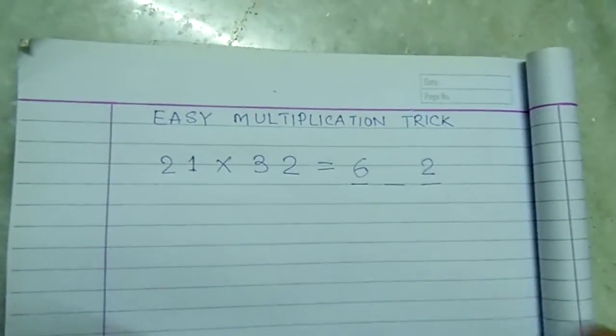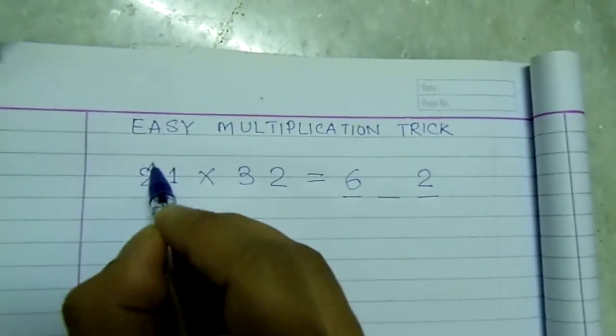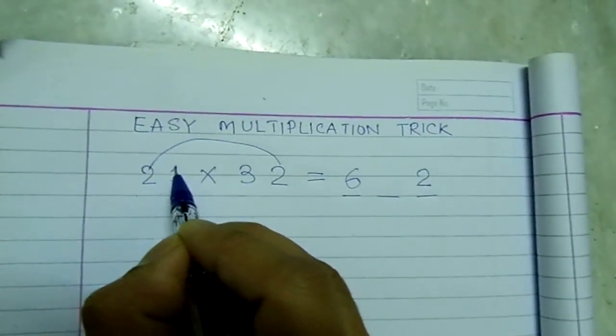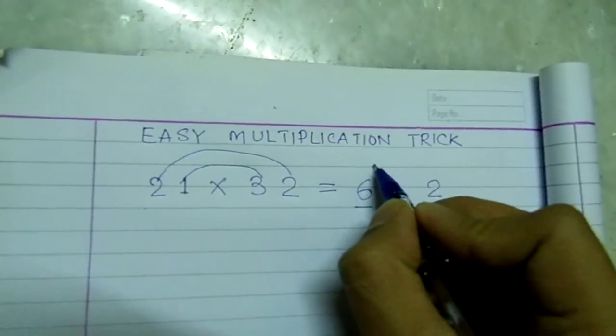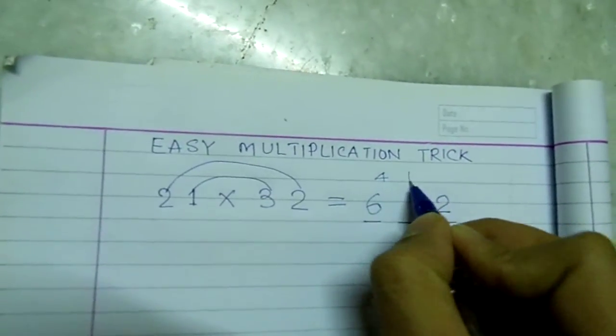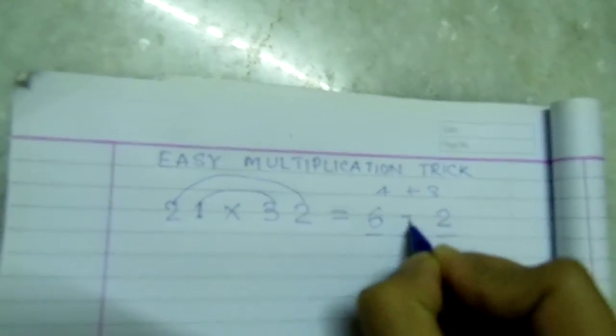Now, to get the middle digit of the product, what we will do is a rainbow multiplication. We will multiply this and this and add them. We will get 2 is to 2, 4, plus 3 is to 1, 3. We get 7.